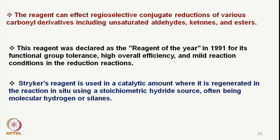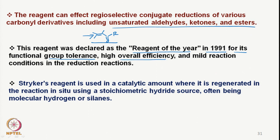The reagent can effect regioselective conjugate addition to various unsaturated carbon derivatives including unsaturated aldehydes, ketones, and esters, where the reduction occurs at the beta end of the double bond. This was declared the reagent of the year in 1991 as it could tolerate different types of functional groups, offering high overall efficiency and mild reaction conditions in reduction reactions. It tolerates various functional groups and is therefore of great use.